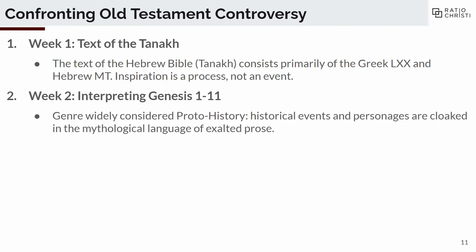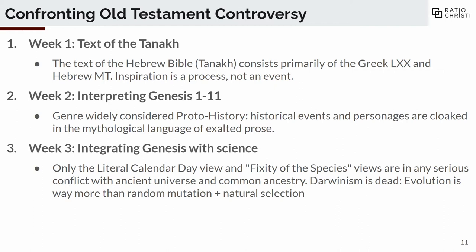We started by asking the interpretive question of Genesis 1 through 11. What we converged on is that this section is referred to as proto-history — historical events, but compressed and told in a sort of mythological language that's not straightforward history but also not purely mythological. It's a very peculiar genre that's a little difficult to interpret. Then we talked about integrating Genesis with science, specifically the questions of the age of the earth, common ancestry, and the mechanisms of evolution.